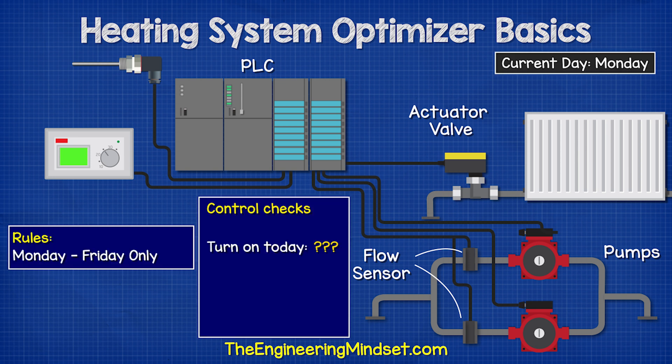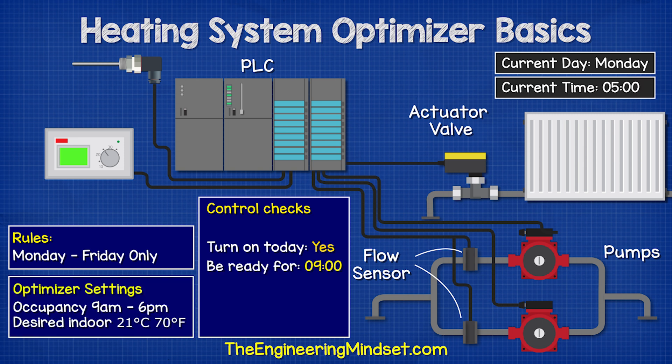The optimizer will check with the clock: should the heating turn on today, and if so, at what time will the building be occupied? The clock replies yes — the scheduled occupancy time is 9am.